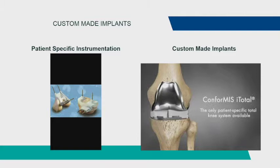Many people ask about custom-made implants. Most of what's advertised is actually patient-specific instrumentation — an MRI is used to make cutting guides, but the same off-the-shelf total knee is implanted. The Conformis is a true custom-made knee based off a CT scan delivered in a small box. It's significantly higher cost upfront but decreases OR costs since you only open one box. However, there is no data showing increased range of motion or other benefit — though it is, as advertised, the only true patient-specific total knee.